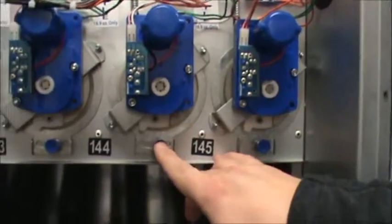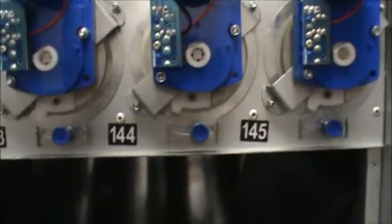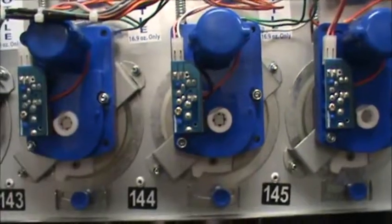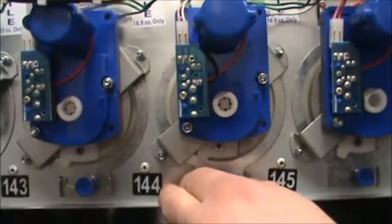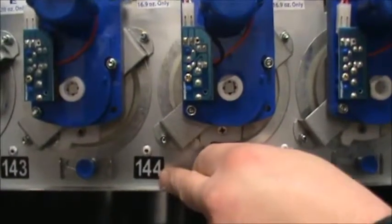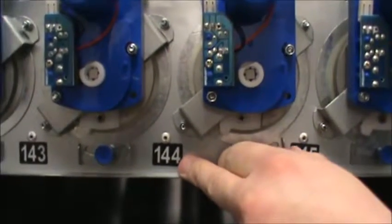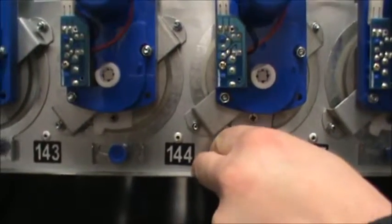Below that is a home switch adjustment. Depending on the size of the product that you're vending you can change this home switch plate and move it left and right to adapt to a larger size bottle or a smaller size.